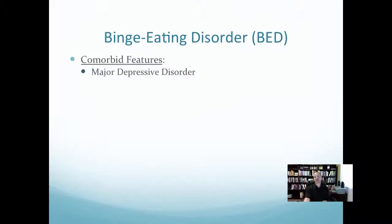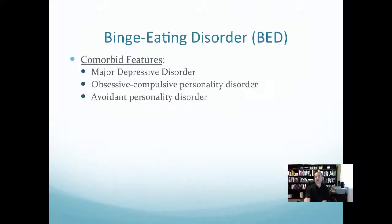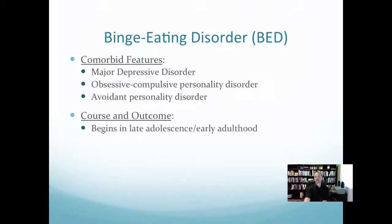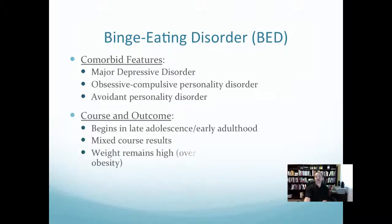Comorbid features of BED include major depressive disorder, obsessive-compulsive personality disorder, and avoidant personality disorder. BED usually begins in late adolescence to early adulthood. Outcomes of treatment are mixed — we don't yet have good data on the best treatment approach. Importantly, weight tends to remain over time; 39% of individuals with this disorder will meet the criteria for obesity.